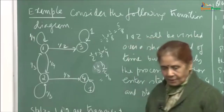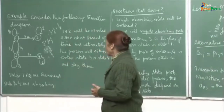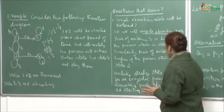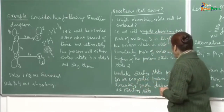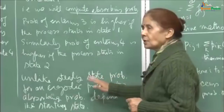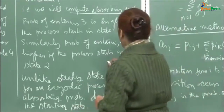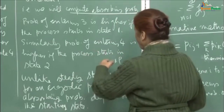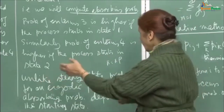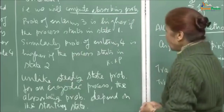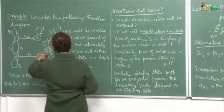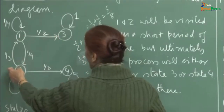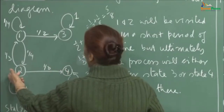What we are trying to make a case for is that the absorbing probabilities are not independent of the starting state. Unlike steady state probabilities for an ergodic process, the absorbing probabilities depend on the starting state. Steady state probabilities were independent of where the system started — we would compute pi = pi * P and all the rows of the matrix became identical. But for absorbing probabilities, it will depend on where you are starting.